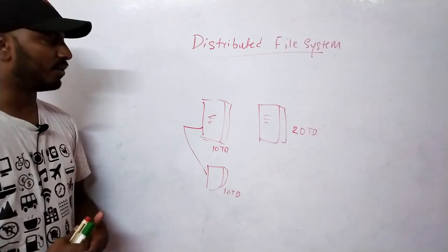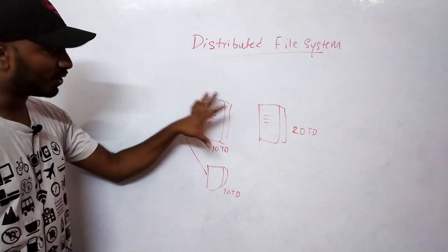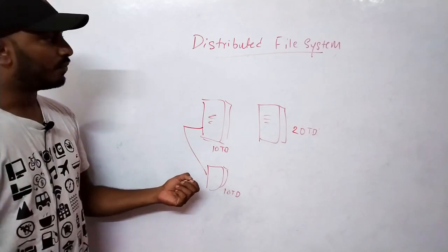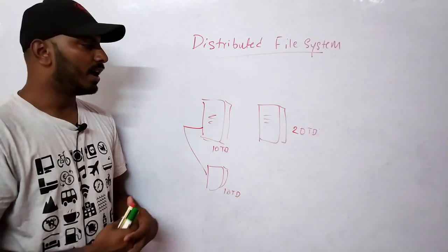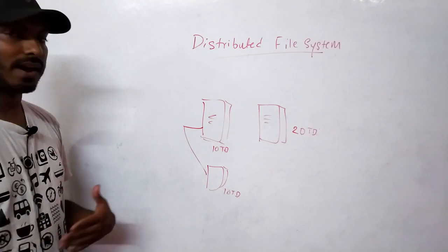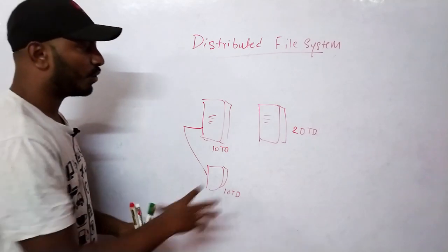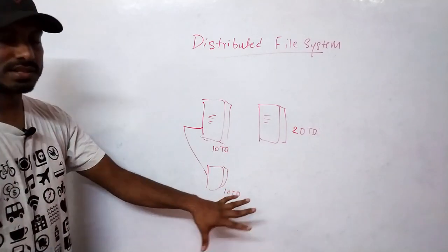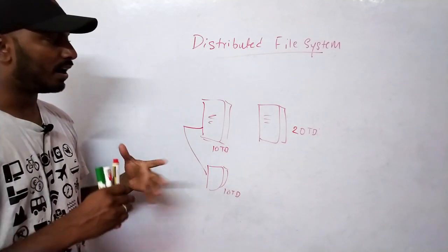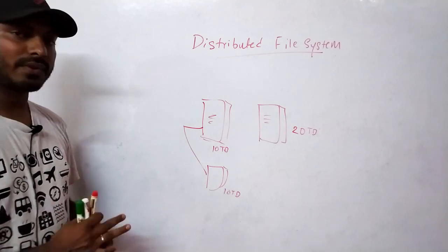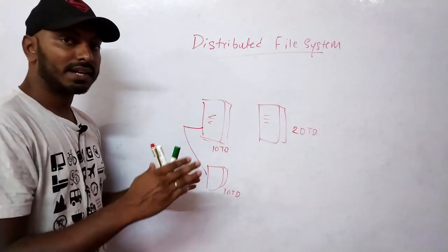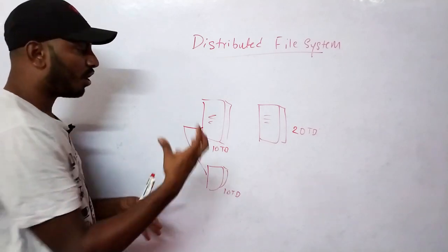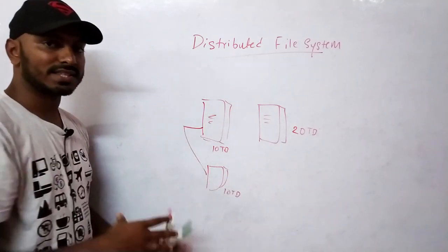In the big data era, where we have petabytes of data, the old way of managing storage is not a good idea. That's why we need distributed file systems. Conventional file systems like NTFS, xFAT, or FAT were designed to handle the storage needs of a single machine, not across multiple machines.